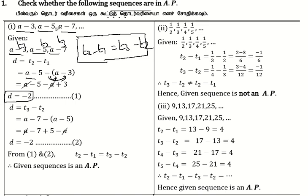Now Term 3 minus Term 2. Term 3 is (a minus 7), Term 2 is (a minus 5). So (a minus 7) minus (a minus 5): minus a plus a cancel, minus 7 plus 5 equals minus 2.